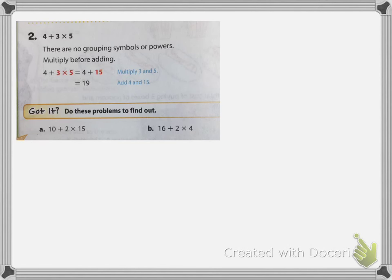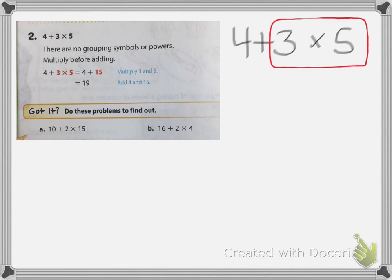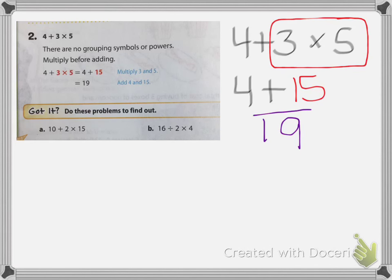Example 2: 4 plus 3 times 5. Write that out. There are no grouping symbols or powers, so make sure you multiply before adding. Put a box around 3 times 5 — multiplication comes first. Bring down the 4 plus since that doesn't change yet. 3 times 5 is 15, so now we have 4 plus 15, which gives a total of 19. Put a box around your answer. Write what I've written here in the margins of your textbook.